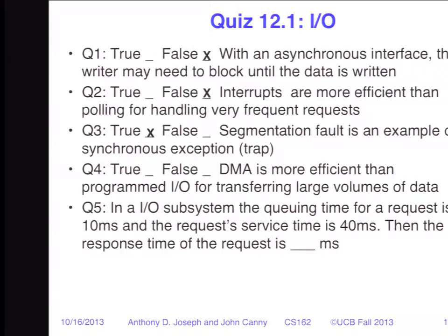Question four: direct memory access is more efficient than programmed I/O for transferring large volumes of data — that is indeed true. Direct memory access is what we use when we want to transfer a large block of data from the disk into memory, or to the network card. It doesn't require any CPU overhead other than setting up the request; after that, the CPU is free to do something else. Programmed I/O means doing loads and stores with the CPU or doing input-output instructions.